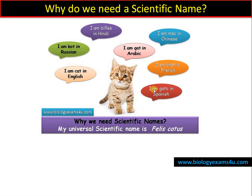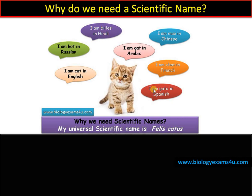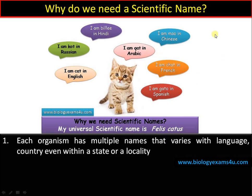This is a problem faced by biologists around the world. They came up with the solution, and that is the scientific name. For each organism we have multiple common names, and we don't have a name that is universal — known to everyone all around the globe. That's a problem in science.